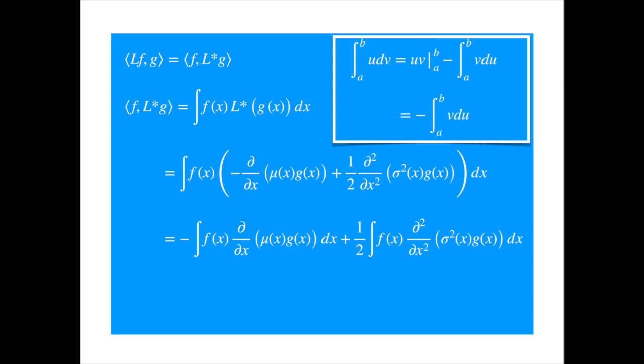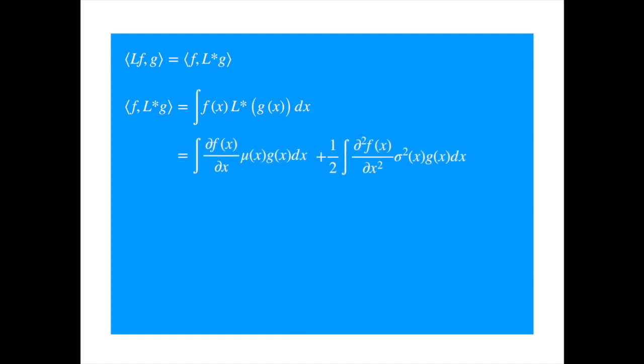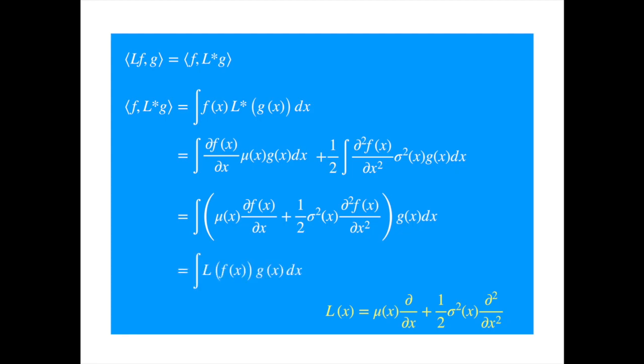So we can read the results of applying the integration by parts to the first term. Notice we change the sign and the position of the derivative. We apply the integration by parts to the second term twice, because we have the second partial derivative inside the integral, but there's no problem. First application of the integration by parts produces a minus sign, which becomes positive when we apply the integration by parts again. And the only other change is the derivative operator goes from the term sigma squared times g to f. Now we can combine the terms inside one integral, factoring out g. So we are applying the property of the linear operator in reverse order.